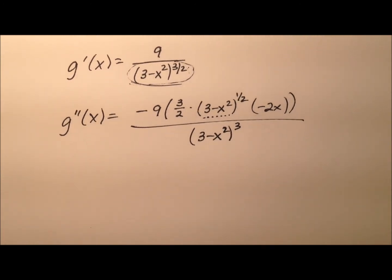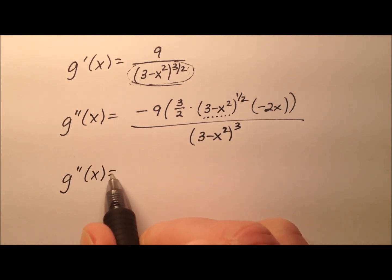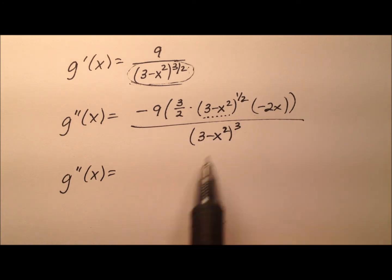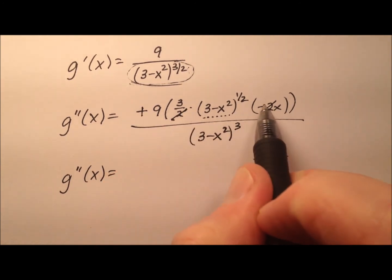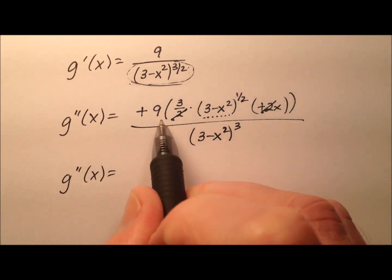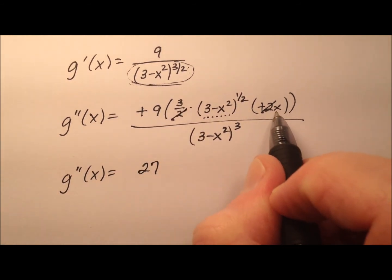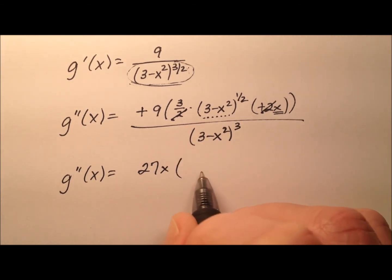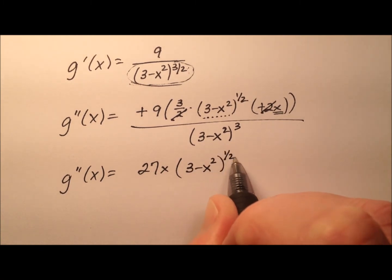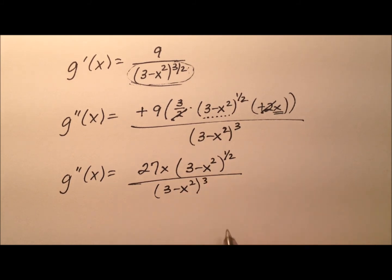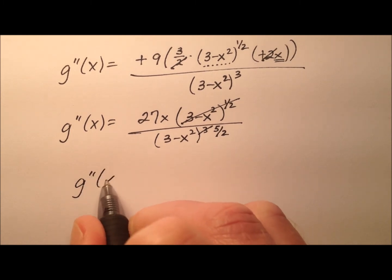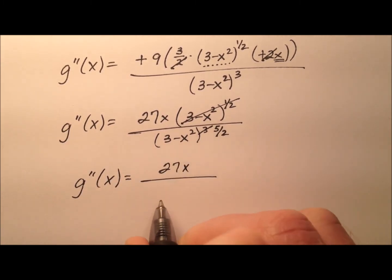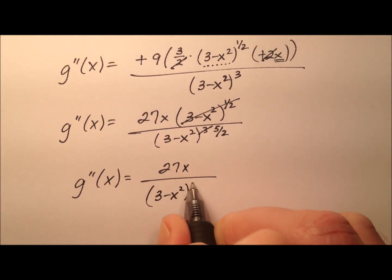Once again we need to work through simplification — and as I always tell my students, the calculus is not the hard part of calculus; it's the algebra that's the hard part. The 2 in the numerator and the 2 in the denominator cancel. The negative and negative cancel to make a positive. 9 times 3 makes 27. We still have the x, so let's not forget about that. We have 3 minus x squared to the power of 1 half, all over 3 minus x squared cubed. These are the same base, so we cancel, and 3 becomes 5 halves when we subtract 1 half from 3.